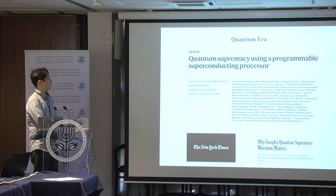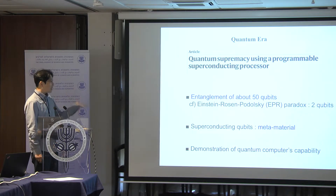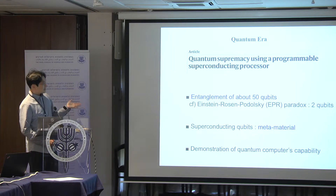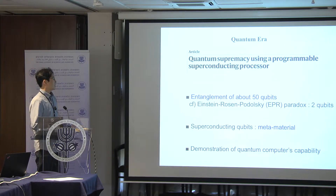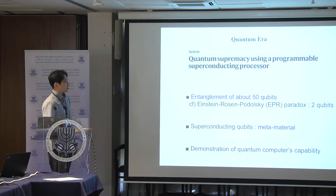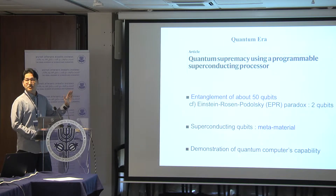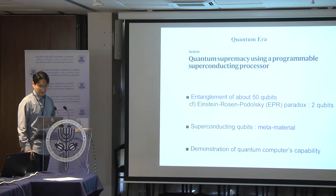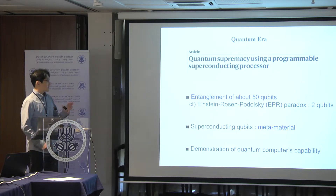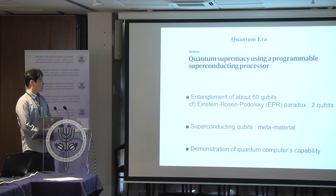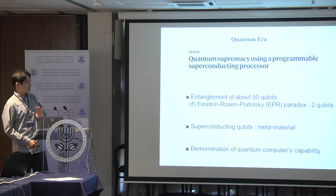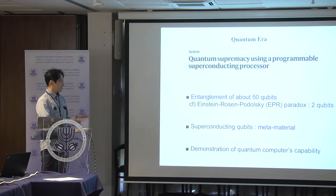This work is about entanglement of about 50 qubits. If you think about the famous Einstein-Podolsky-Rosen paradox, the EPR paradox is about two qubits. Now, after 100 years, we can control 50 qubits and understand their entanglement. This work is not about real materials — it's a metamaterial in the sense that they use superconducting qubits. But my work is to search for this interesting state in real material.